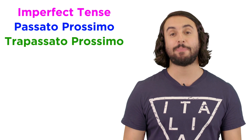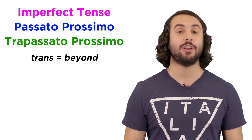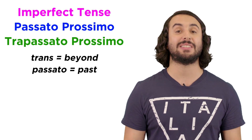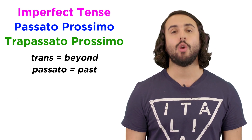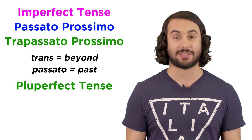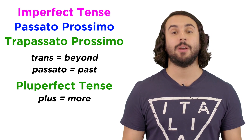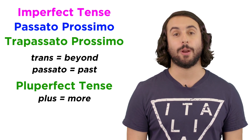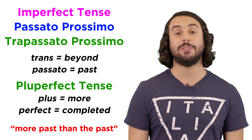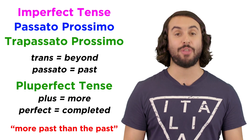When we look at the word trapassato, if we take the prefix as being derived from trans, meaning beyond, and recall that passato means past, we can see how this is similar to the English name for this tense, the pluperfect, as plu comes from the Latin plus, which means more, and perfect implies that something is completed. So literally, the name of this tense means more past than the past.